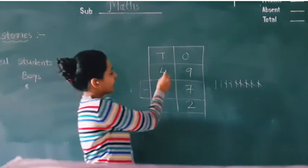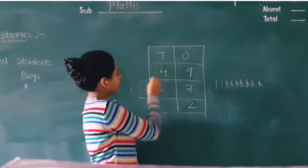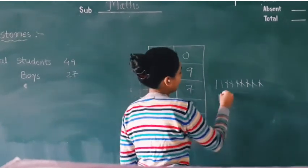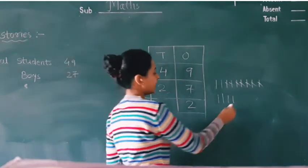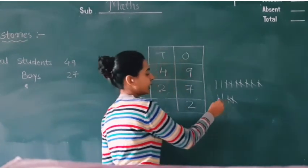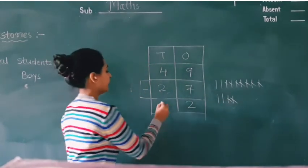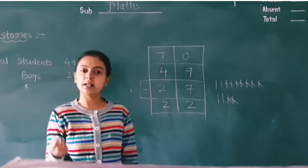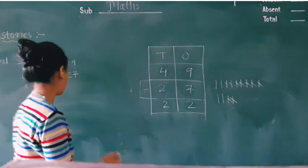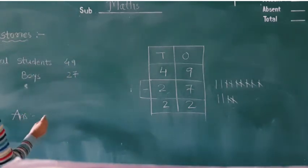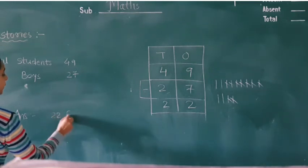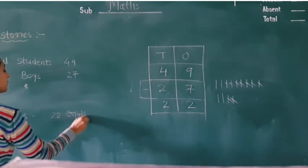Now subtract tens. 4 minus 2. 1, 2, 3, 4 minus 2. 2 cut karna hai, cancel: 1 and 2. Remaining lines here 2. So there are 22 as the answer. There are 22 girls in the class. The answer will be 22 girls.